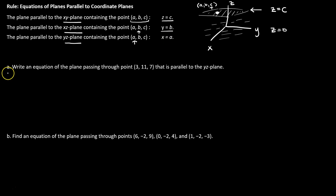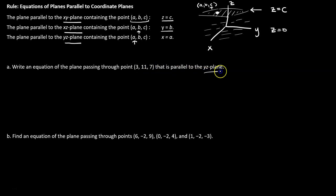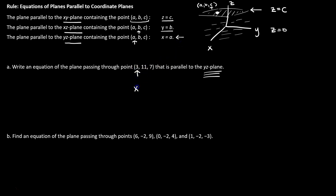Let's try it. Write the equation of a plane that passes through the point (3, 11, 7) and is parallel to the yz plane. If it's parallel to the yz plane, it must have a fixed value for x, which means our equation has to be x equals 3.